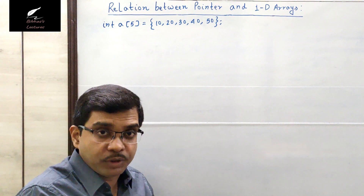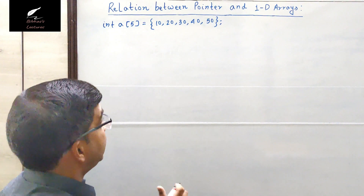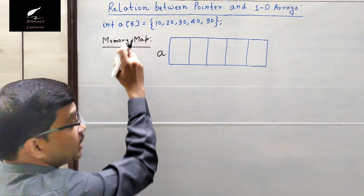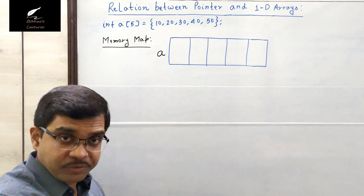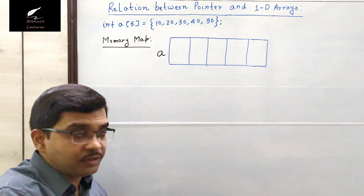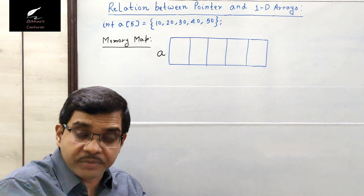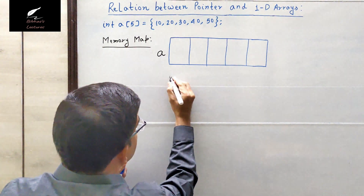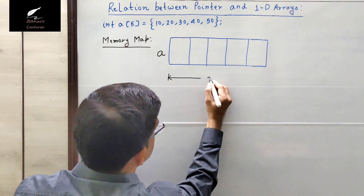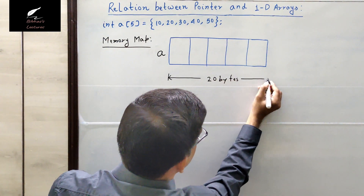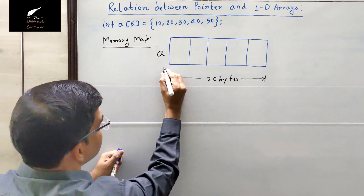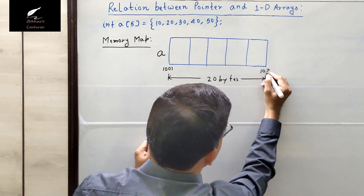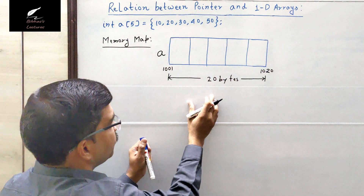I'll draw the memory map of this 1D array. The name of the array is 'a'. An integer takes four bytes of memory, so five integer values will take 5×4 = 20 bytes of contiguous memory, because memory is always allocated for an array in contiguous locations. Suppose the allocation starts from address 1001, so 1001 to 1020 is reserved for this array.